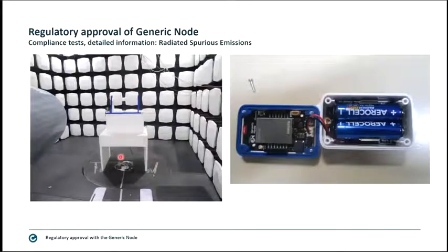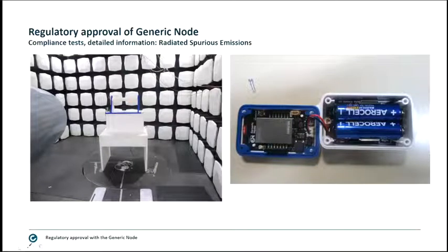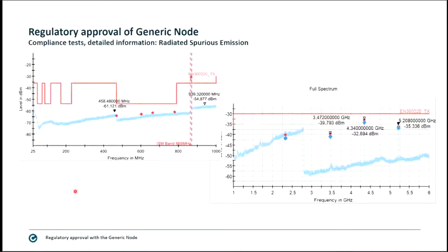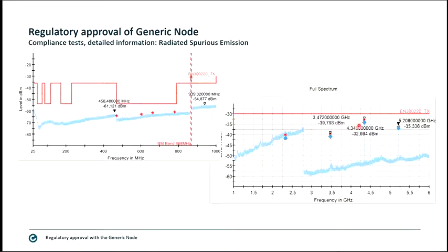This is a fully anechoic chamber with absorbers also under the floor. Radiated spurious emissions were tested here with the device open and on a rotating device mover. Results look comparable to the EMC testing but with a different limit line. The test concentrates on harmonics of the carrier frequency — in this case 868 MHz ISM band. Harmonics are identified and tested; for example, 3.472 GHz shows a respective peak, though it remains below the limit of -30 dBm.